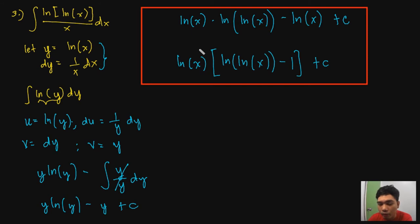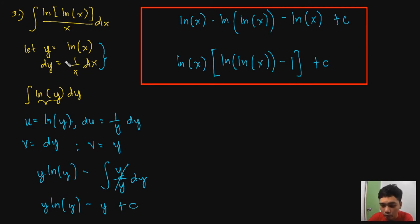Number 3 is quite straightforward once you recognize the u-substitution with y = ln(x). Without that substitution, it would be difficult to identify u and dv directly. This shows how combining u-substitution with integration by parts simplifies the problem significantly.